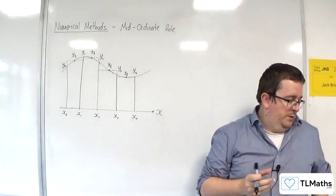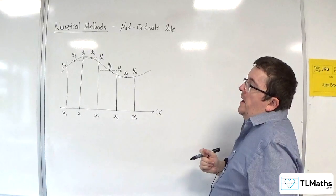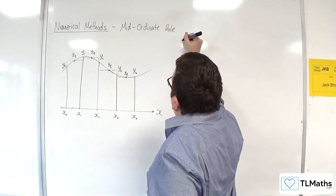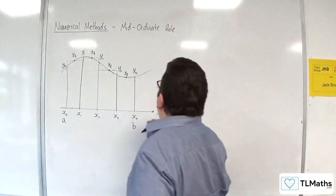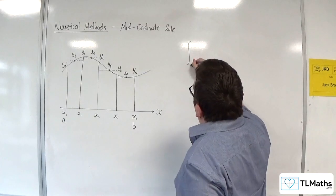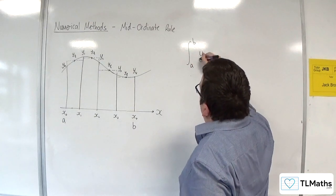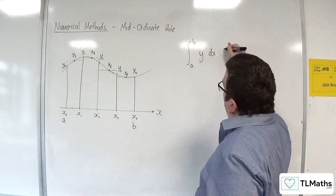So how do I work out that total area? Let's say that this is the point A and this is the point B, and I am trying to approximate this integral.